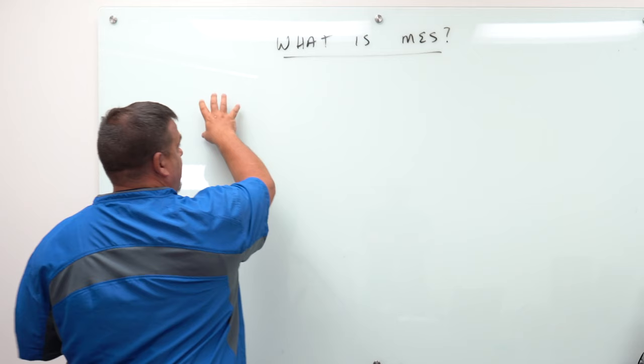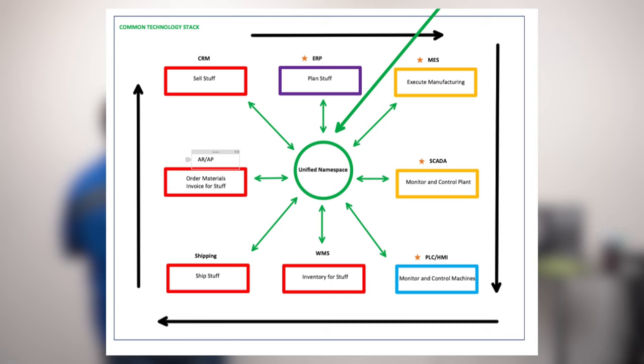You guys have seen this before. We sell stuff, we plan to manufacture stuff, we execute the manufacturing of it, we inventory it, we ship it, we get paid for it, we do it all over again. That's every manufacturer.